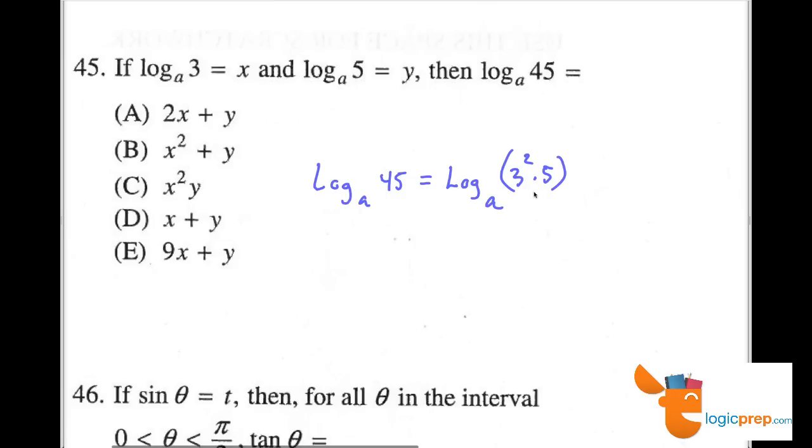Well, now if we look carefully here, we want to break this apart with log rules. So we can say that log_a(45) equals, now I'm going to split this into log_a(3²) plus, remember that addition rule, because when we add logs with like bases, we multiply. So we have log_a(5).